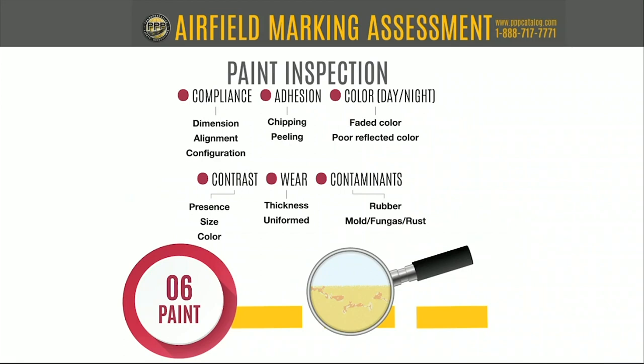Other paint inspection factors include contrast such as black contrast borders, wear and coating thickness and uniformity, and contaminants. Rubber from traffic or landings is common, but also other contaminants like mold, fungus, algae, and rust can all impact the quality of the painted line itself.